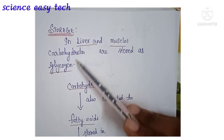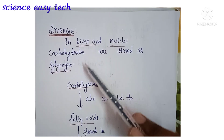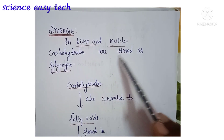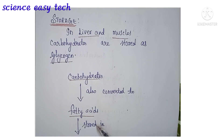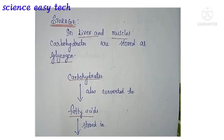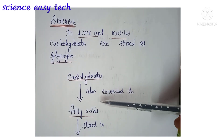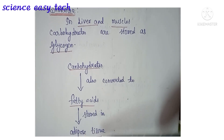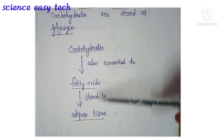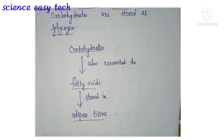Storage: glucose is stored as glycogen in the liver and muscles. Excess carbohydrates can also be converted to fatty acids through a complex cycle and stored in adipose tissue. This is why eating too many sweets leads to fat accumulation — those excess carbohydrates are converted to fatty acids and stored in adipose tissue.